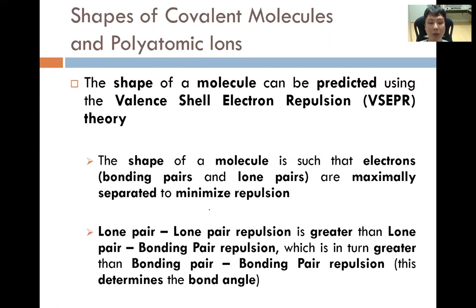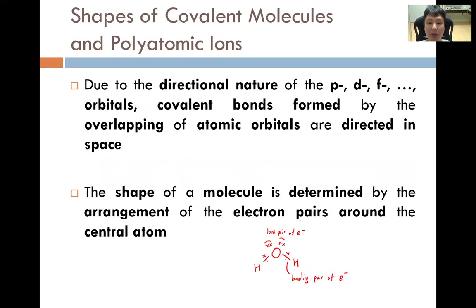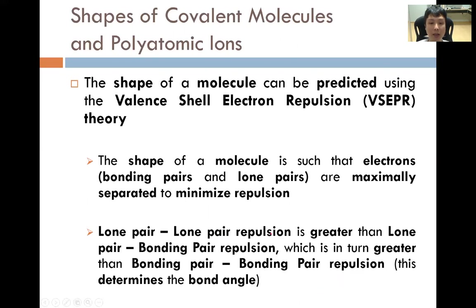We note that lone pair–lone pair repulsion is greater than lone pair–bond pair repulsion, which is in turn greater than bond pair–bond pair repulsion. This determines the bond angle in the shape of the covalent molecule. For example, in the water molecule there is repulsion between the two lone pairs, between the two bond pairs, and between each lone pair and each bond pair, in that order of strength.